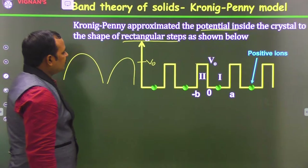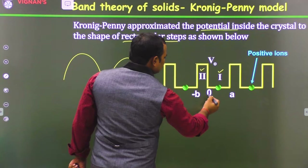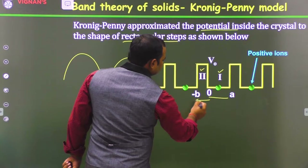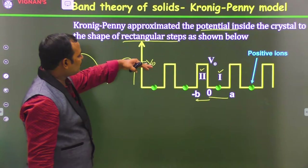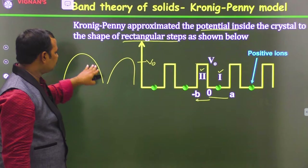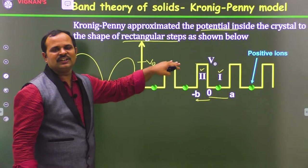Now we consider two regions. Region 1 is between 0 to a, where the potential is 0. Between 0 and −b, the potential is V₀. Kronig-Penney approximated the potential in this way, making it easy to calculate and solve the Schrödinger equation by using this kind of approximation.